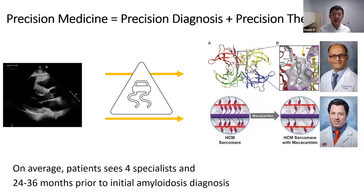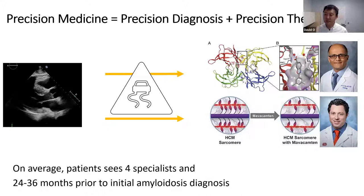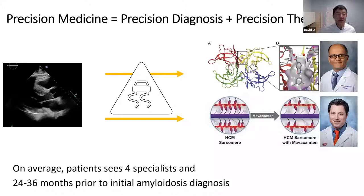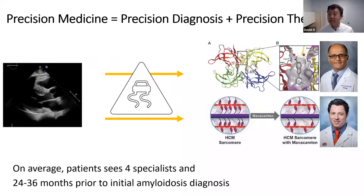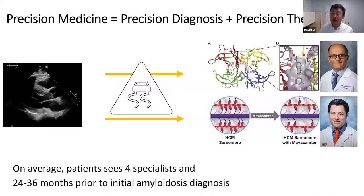Precision medicine is both precision diagnosis and precision therapeutics. We have great new targeted therapies — tafamidis, navacamtam are fantastic. But getting the patient to the right diagnosis and therapy is still very hard. Most pharmaceutical companies will tell you patient acquisition cost is still very expensive because people overlook these diagnoses. In the case of cardiac amyloid, literature suggests patients need to see up to four specialists and two to three years to get an initial diagnosis — even though many of these patients have had an echo for another reason. Can we actually identify underdiagnosis and identify patients at scale?